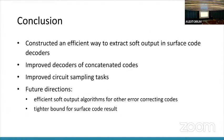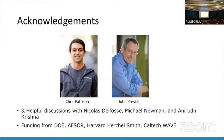In conclusion, we were able to construct an efficient way to extract the soft output in surface code decoders. In doing so, we improved the decoders of concatenated codes and improve some circuit sampling tests. In the future, it would be cool to come up with more efficient soft output algorithms for other error correcting codes and also a tighter or the other bound for the surface code result. Lastly, thank you. I worked on this project with Chris and John, and Chris was my main mentor throughout the project and taught me everything about error correction, hierarchical codes and soft output. He was the main driver on this project. So huge thank you to Chris. We were working at Caltech last summer. Thank you.